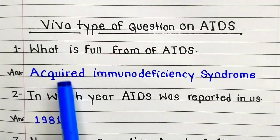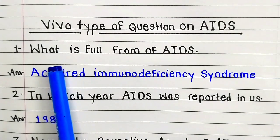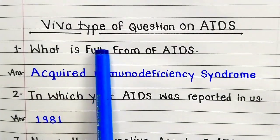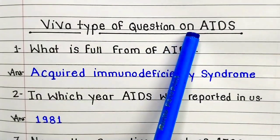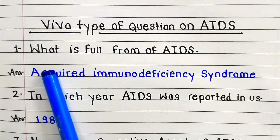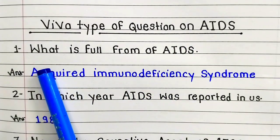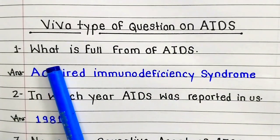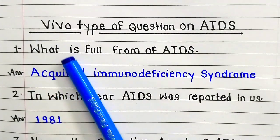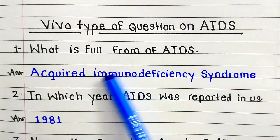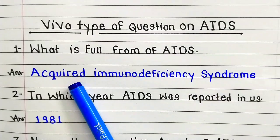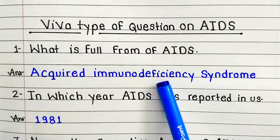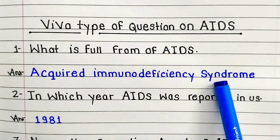Hello friends. Biology Vibor question on AIDS. Question number one: what is the full form of AIDS? Answer: Acquired Amino Deficiency Syndrome.